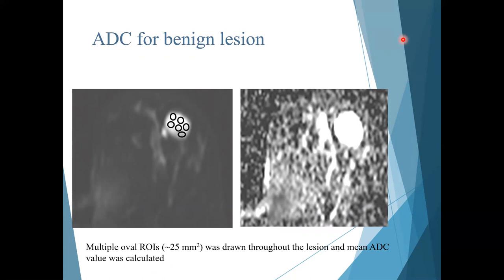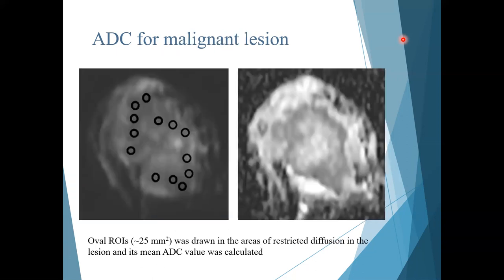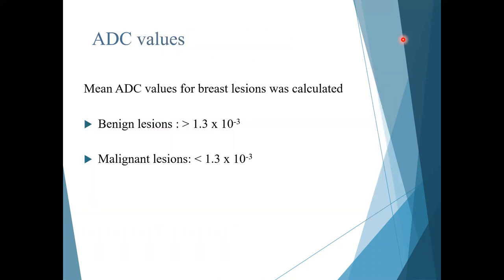ADC value for benign lesions was calculated by drawing multiple ROIs, each approximately 25 mm², throughout the breast lesion, and the median ADC value was calculated. In case of malignant breast lesions, multiple ROIs of approximately 25 mm² were drawn in the areas of restricted diffusion within the lesion and the mean ADC value was calculated. The mean ADC values for benign breast lesions was found to be more than 1.3 × 10⁻³, and for malignant lesions it was less than 1.3 × 10⁻³.